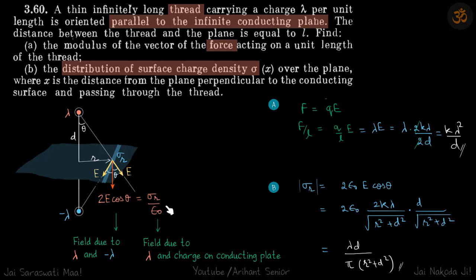Let's find sigma first. Equating these two, sigma equals 2 epsilon naught E cos theta, and E due to the wire is 2k lambda by r. The distance r is square root of d squared plus r squared times cos theta. Cos theta is d by square root of r squared plus d squared, which gives our answer.